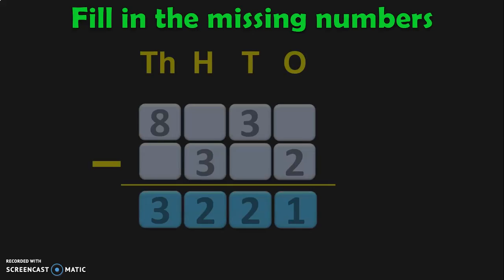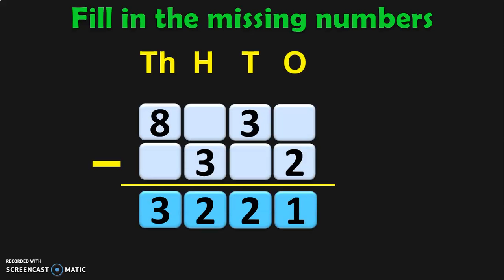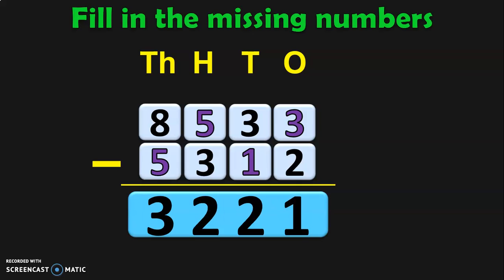Fill in the missing numbers. Begin from the ones place: dash minus 2 is 1, so 3 minus 2 is 1. In the tens place: 3 minus dash is 2, so 3 minus 1 is 2. In the hundreds place: dash minus 3 is 2, so 5 minus 3 is 2. In the thousands place: 8 minus dash is 3, so 8 minus 5 is 3. Therefore, 8,533 minus 5,312 gives you the answer 3,221.